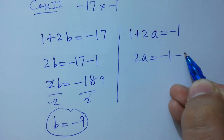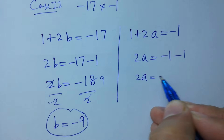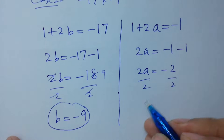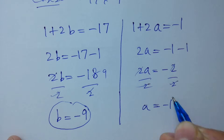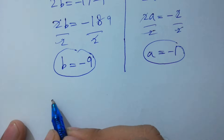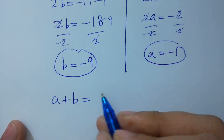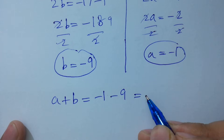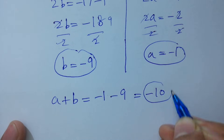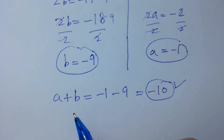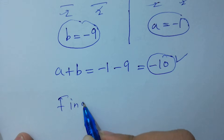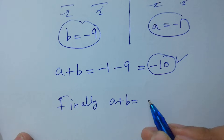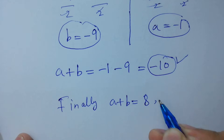And for a: 2a equals negative 1 minus 1 equals negative 2. Dividing by 2, we get a equals negative 1. So a plus b equals negative 1 plus negative 9 equals negative 10, which is also a value of a plus b. Finally, a plus b equals 8 or negative 10.